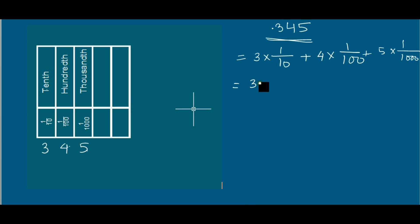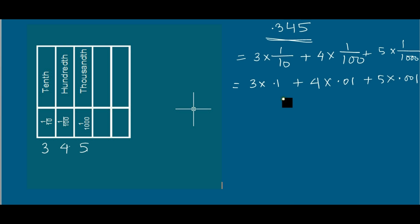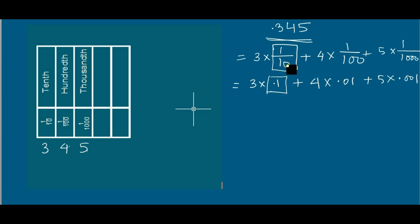We can also write this number as 0.1, 0.01, 0.001. What I did is I converted the number from its fractional part. I replaced the fraction 1 by 10 with the decimal number 0.1. In place of 0 I wrote 1, and in place of 1 I wrote the decimal number.